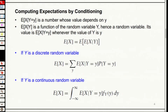But if we don't fix y, this expectation — E[X|Y] — is actually a function, because Y can take different random values. Y is a random variable, and every time Y takes a different value, E[X|Y] will become a different number. So hence, this is a random variable — because it is a function of the random variable Y.